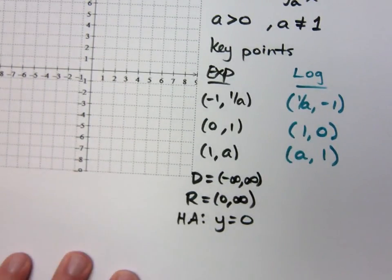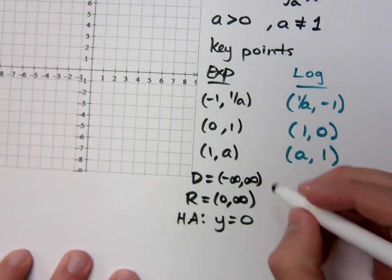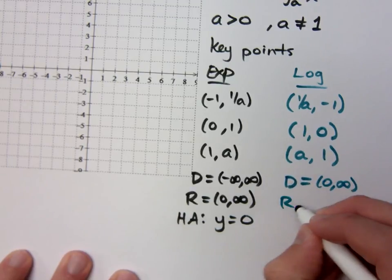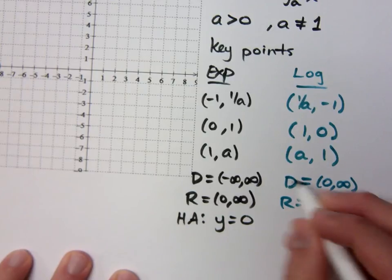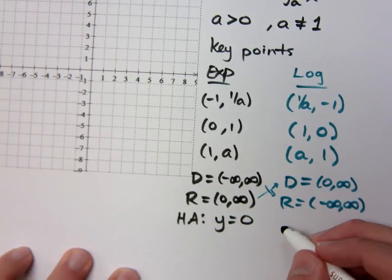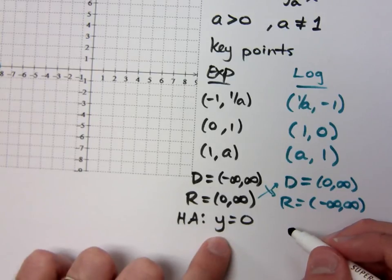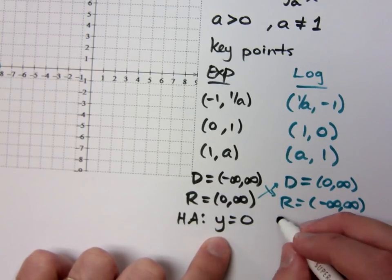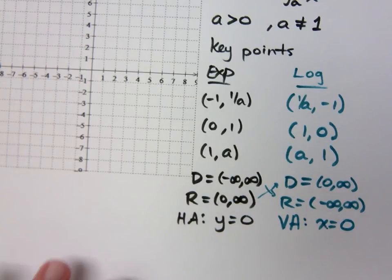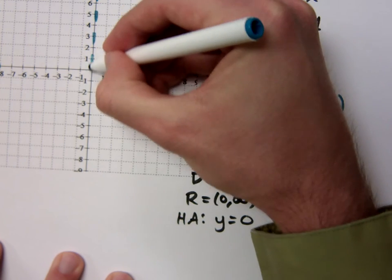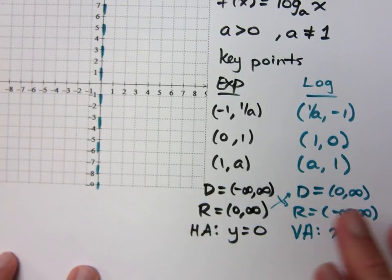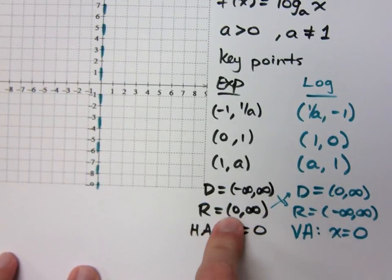If the log is supposed to be the inverse of this, everything is flipped around, so that means that my domain is now what? 0 to infinity, and your range is negative infinity to infinity. My range is all real numbers because your domain becomes your range, your range becomes your domain. So what's your horizontal asymptote? You don't have one. If I change my x's to y's and y's to x's, you have a vertical asymptote. So this is going to give me a vertical asymptote at x equals 0, which means for my logarithmic functions, I have this guy right here.